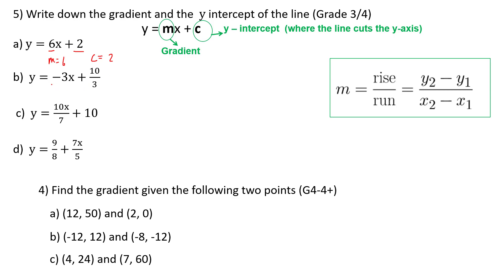Can we see m here is minus three, and then c here is ten over three. Now m here is ten over seven, and then c here, the y intercept is ten.